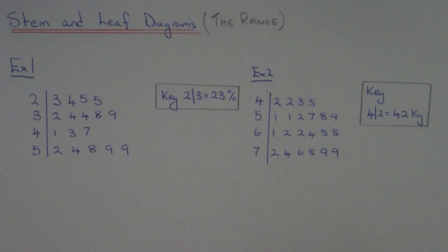So we need to find the biggest and smallest number from our stem and leaf diagram. If you look at example one, what we have are some test results of a group of students.